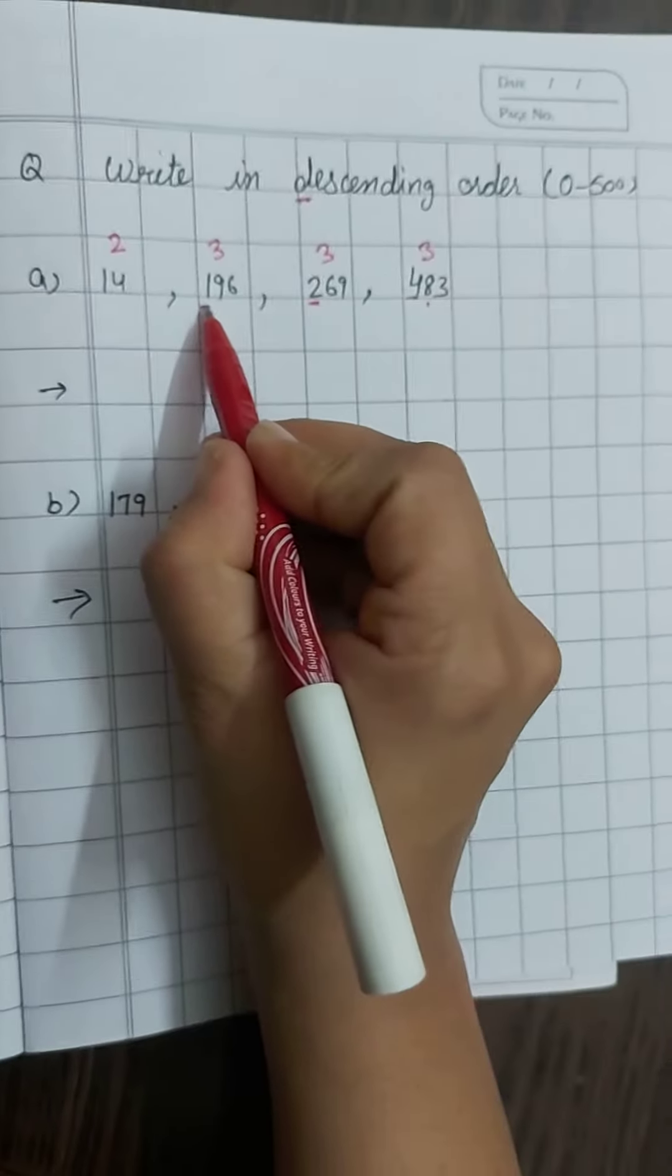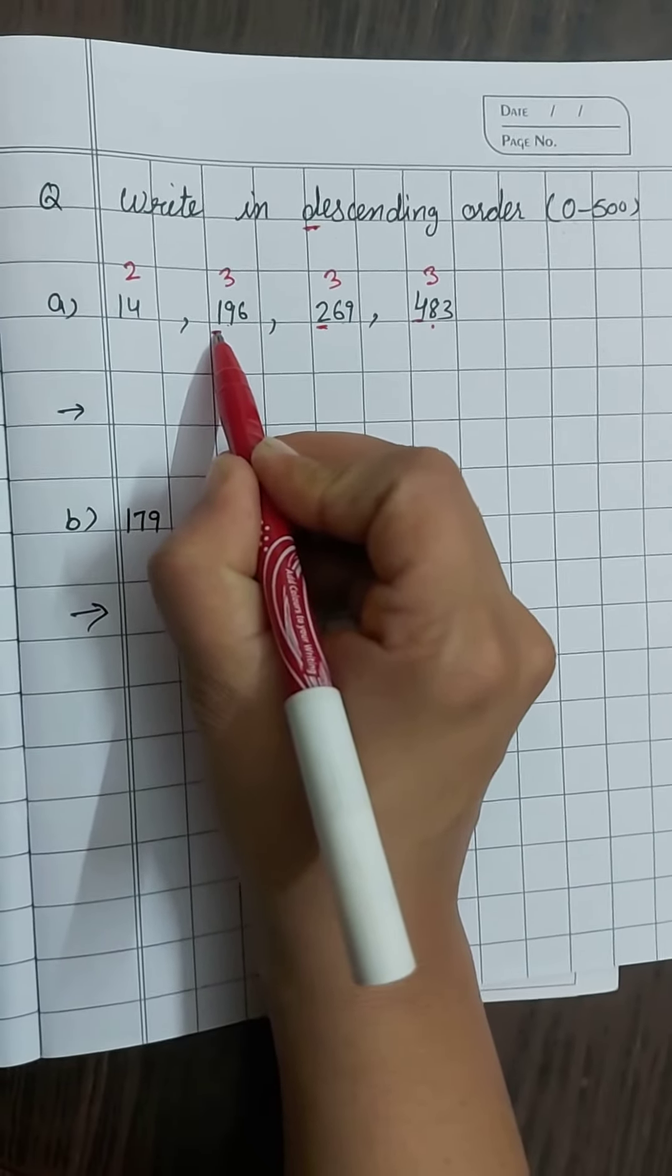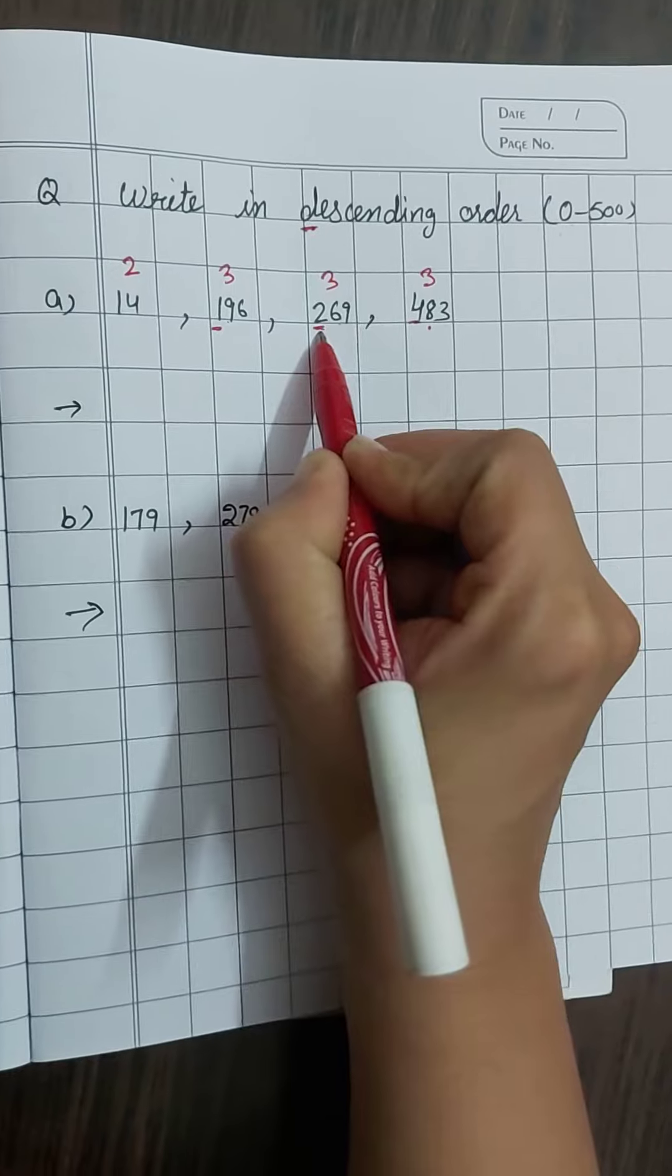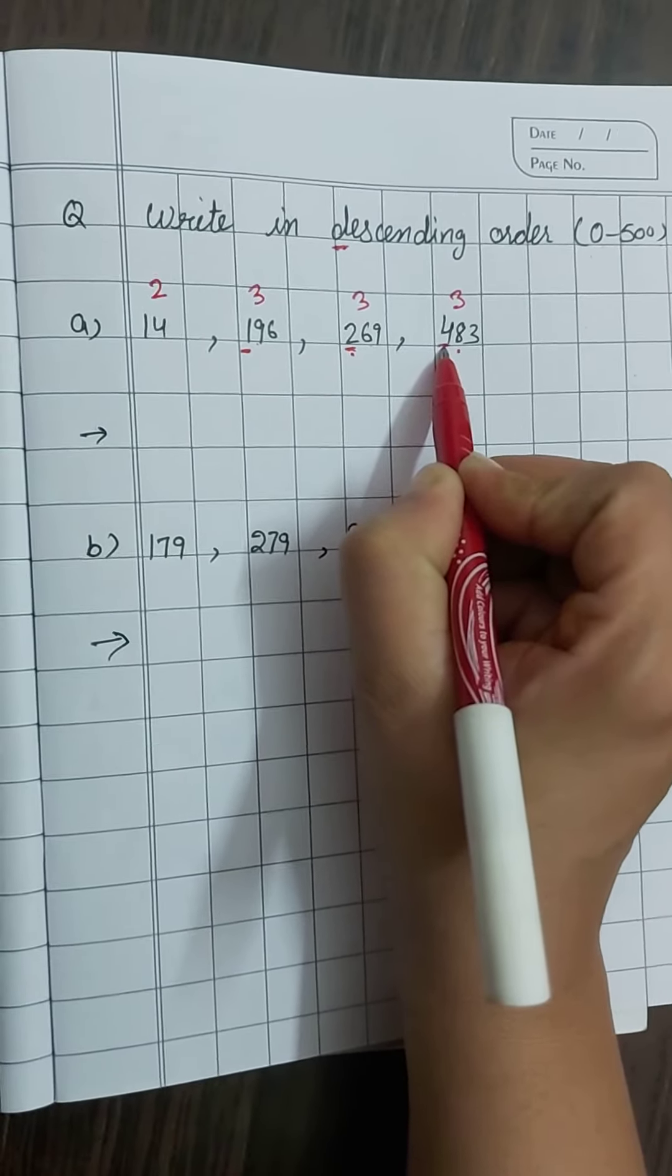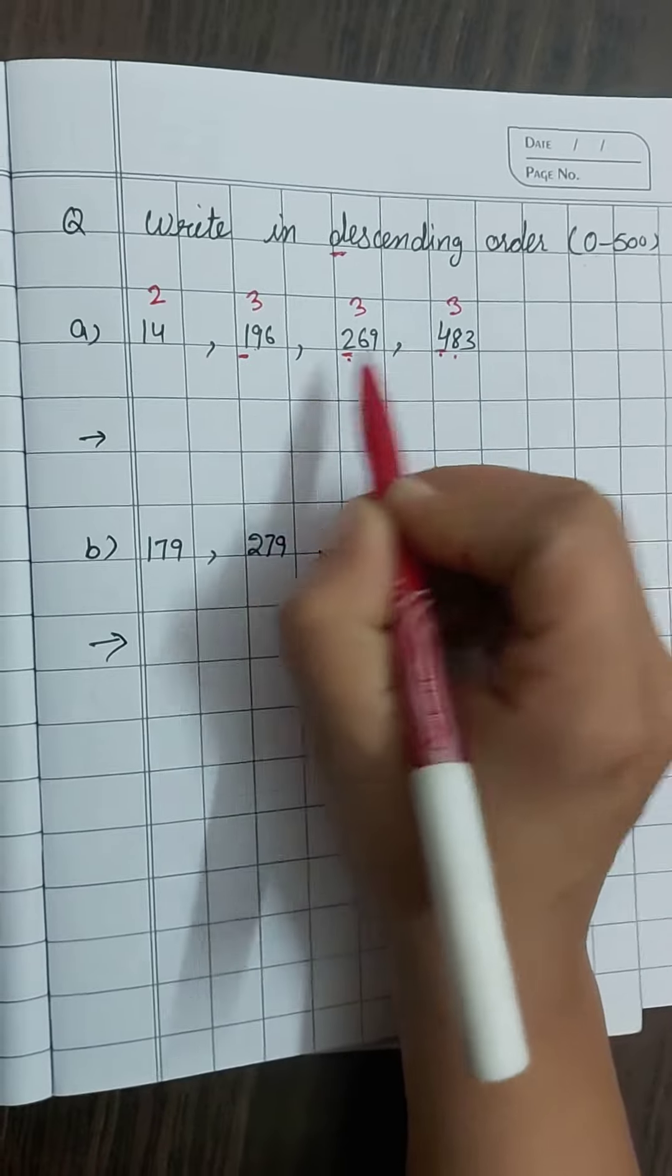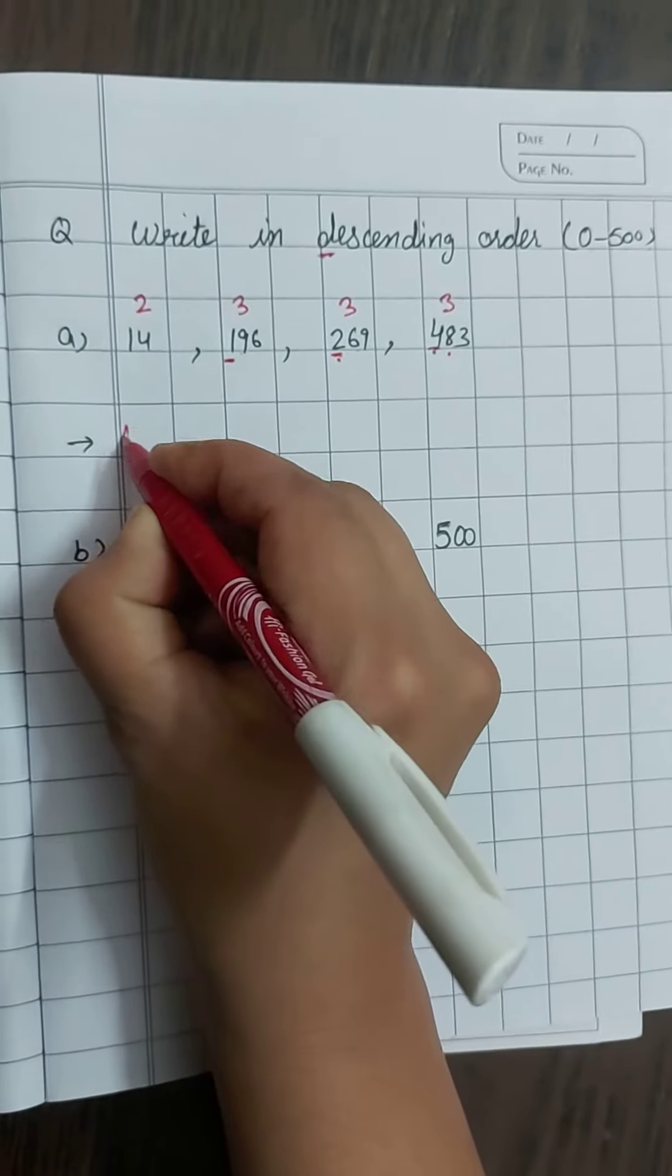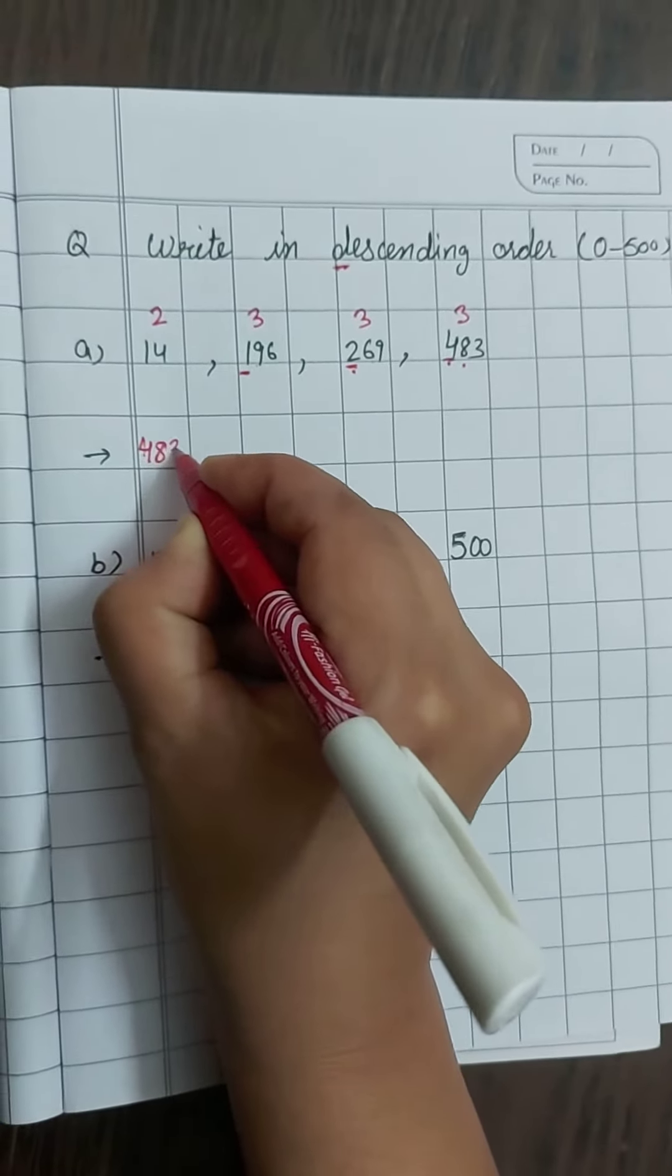Iske hundred place pe one hai. Iske hundred place pe two hai. Iske hundred place pe four hai. To four is the biggest number digit. So hum kya karenge sabse pehle? Four hundred twenty three.